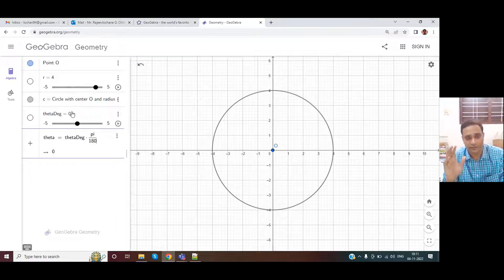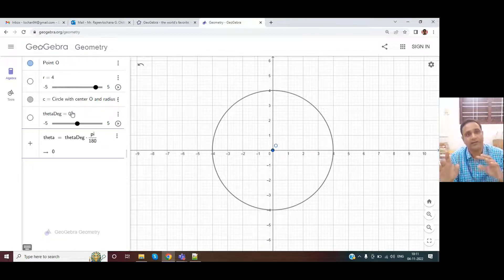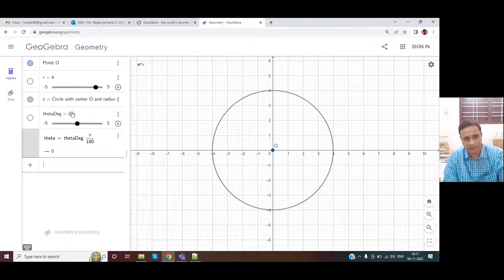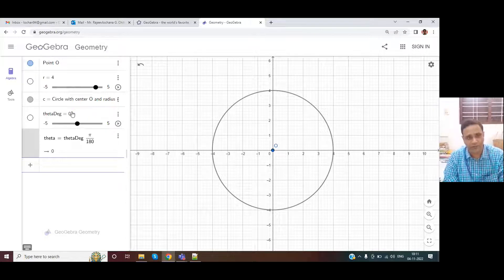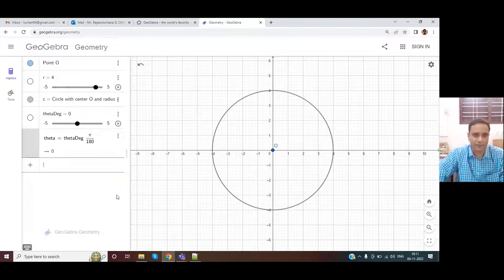So when we do this, the degree angle is converted to radians. Since 0 degree is same as 0 radians, you don't see much effect here.